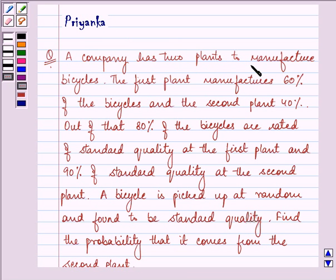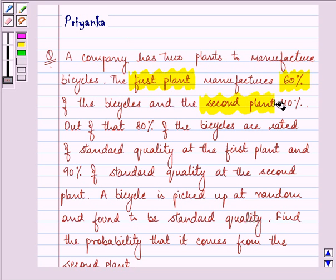It says a company has two plants to manufacture bicycles. The first plant manufactures 60% of the bicycles and the second plant manufactures 40%.